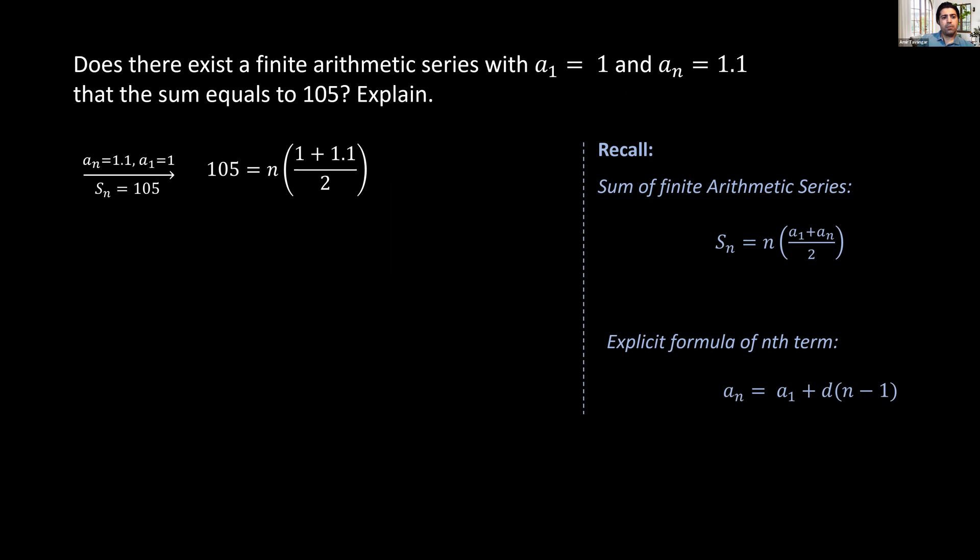So we substitute the first term 1 and the nth term 1.1 and the sum of 105 and then we solve for n. We evaluate the bracket on the right and then finally we divide both sides by 1.05, which is the numerical coefficient of n, and we'll get n to be 100.